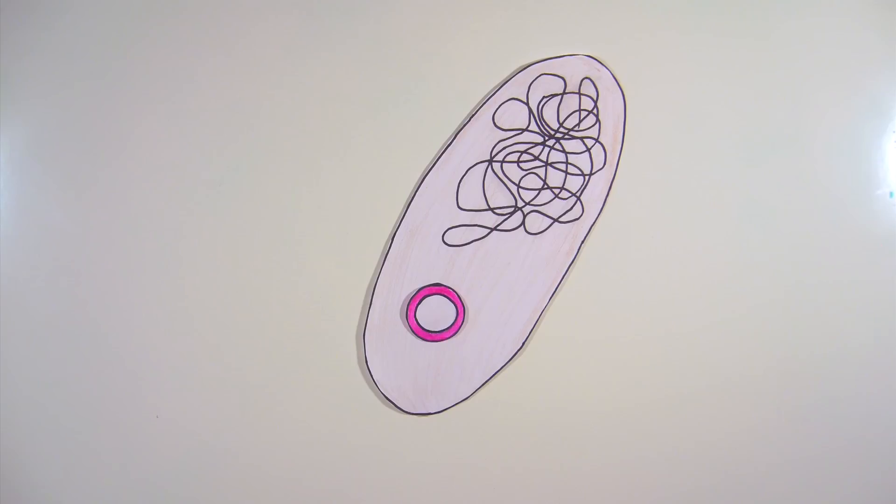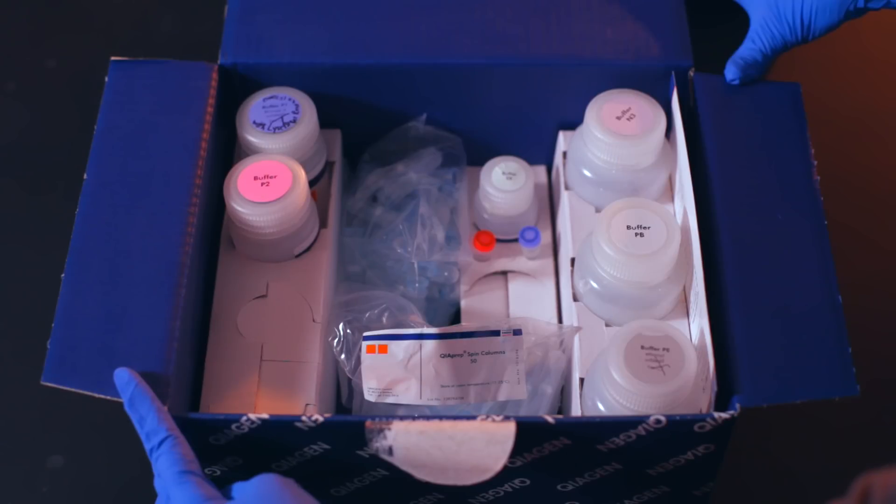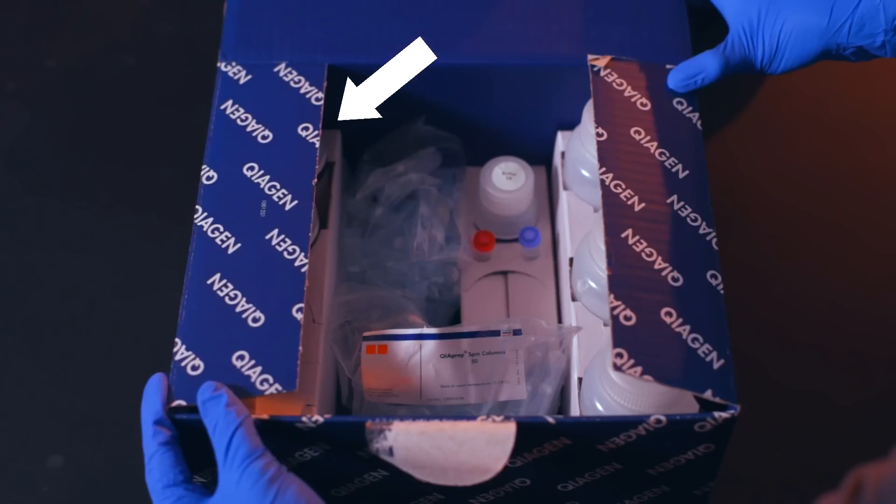In order to extract plasmid DNA from bacteria, biologists use a plasmid isolation kit, sometimes called a plasmid mini prep kit. This kit consists of a variety of buffers and a column that binds to the plasmid DNA to purify it.